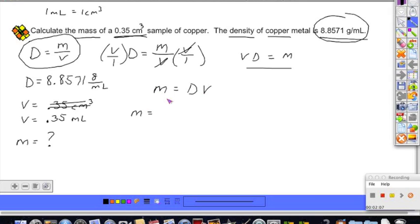Now it's pretty much plugging in the values that we know. The density, which was given to us, is 8.8571 grams per milliliter. Now we're going to multiply that value by the volume, which is 0.35 milliliters. Now notice this is the same as milliliters over 1, and you can clearly see that milliliters is on the top half of the fraction and on the bottom half of the fraction over here, and they will cancel, leaving us with only a unit of grams, which does express mass. So that's great.